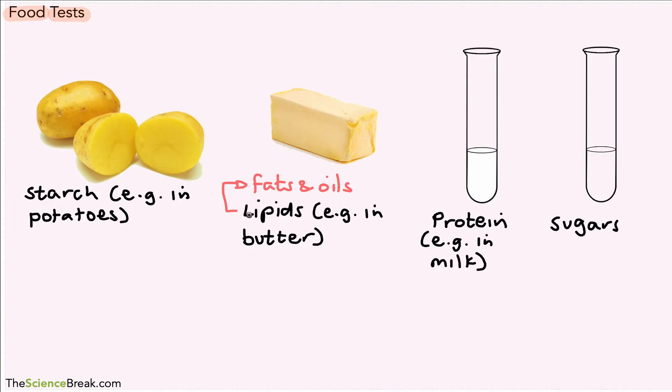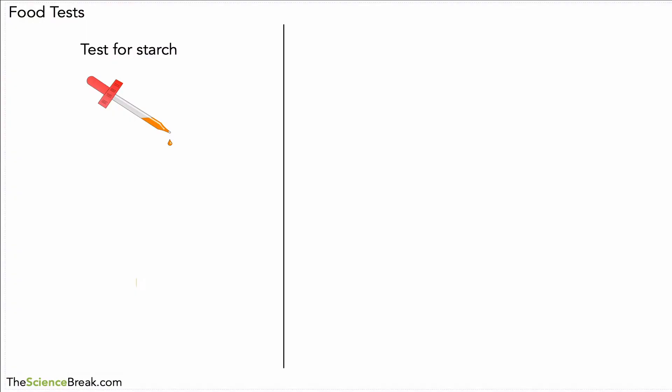We're going to look at how these food types are tested. We'll start with starch. To test for starch, we use iodine solution.